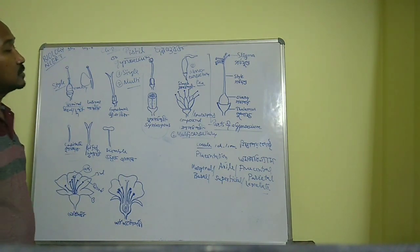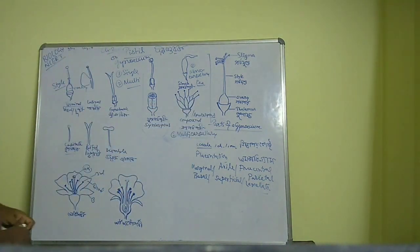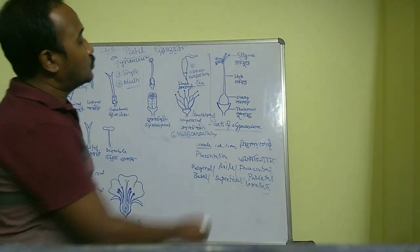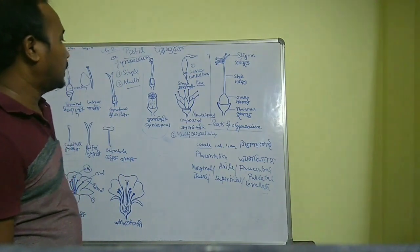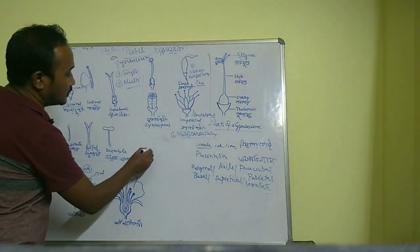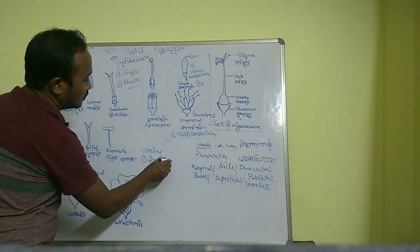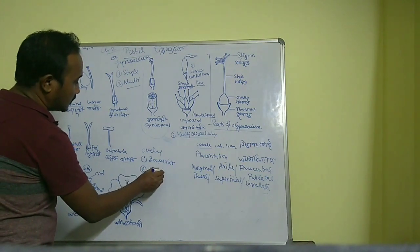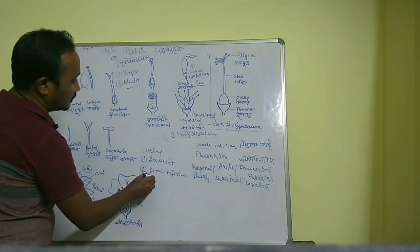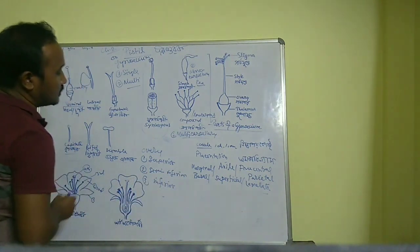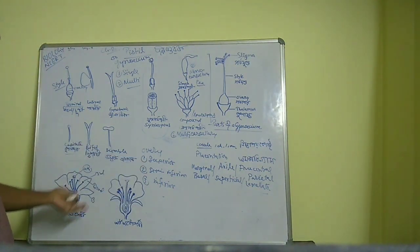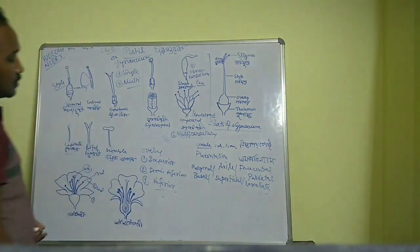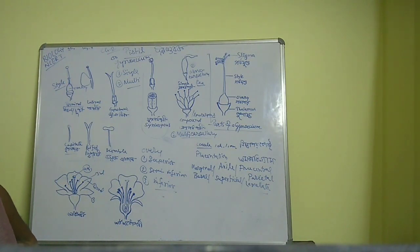Next is the ovary. The ovary is the basal swollen part. According to the position of the ovary relative to the thalamus, ovaries can be divided into three types: superior, semi-inferior, and inferior.